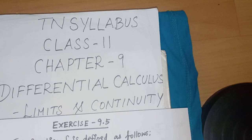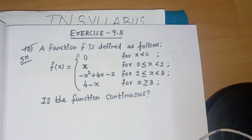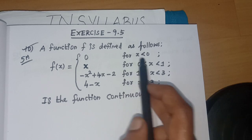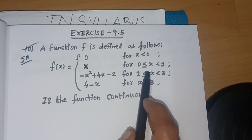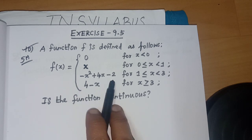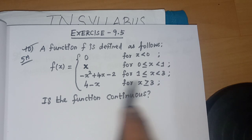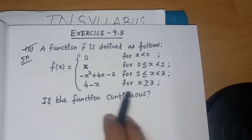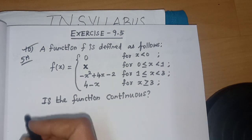Hello students, welcome to Harimax channel. TN syllabus Class 11, Chapter 9: Differential Calculus - Limits and Continuity. Exercise 9.5, question 10 — a very important 5-mark problem. A function f is defined as follows: f(x) = 0 for x < 0; f(x) = x for 0 ≤ x < 1; f(x) = -x² + 4x - 2 for 1 ≤ x < 3; f(x) = 4 - x for x ≥ 3. Is the function continuous?